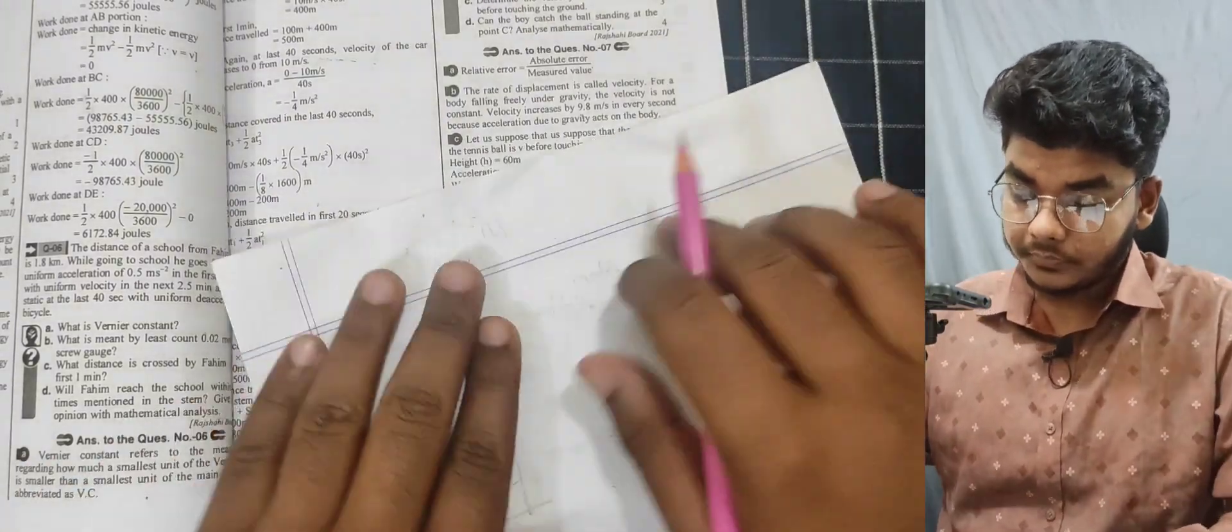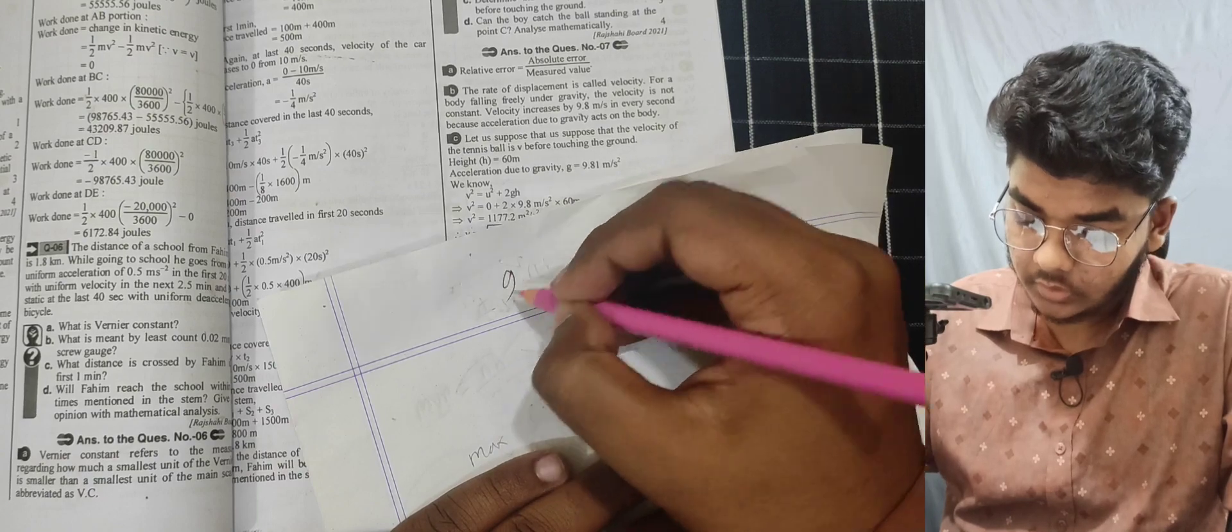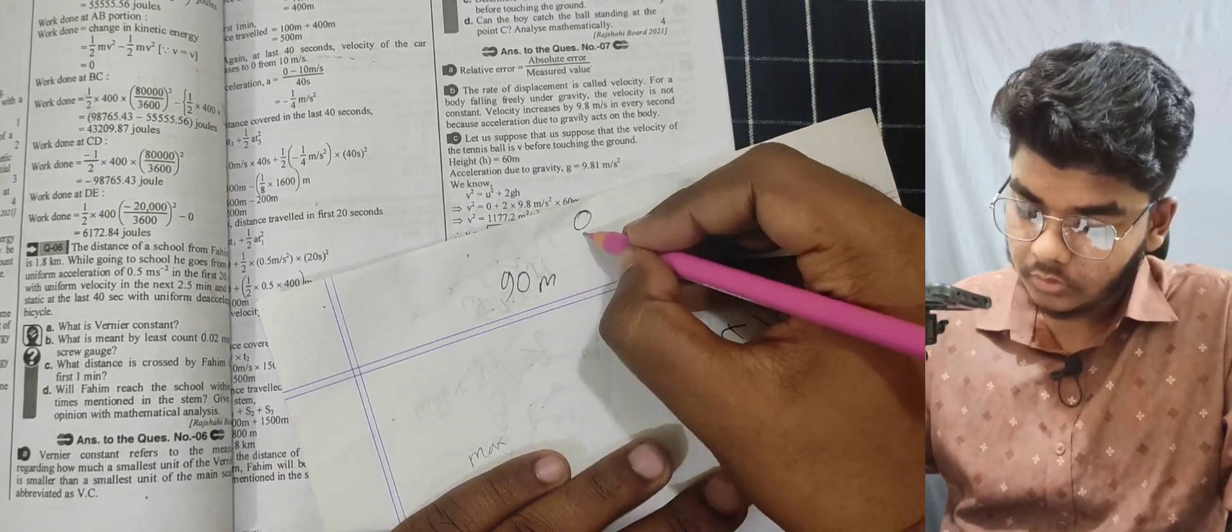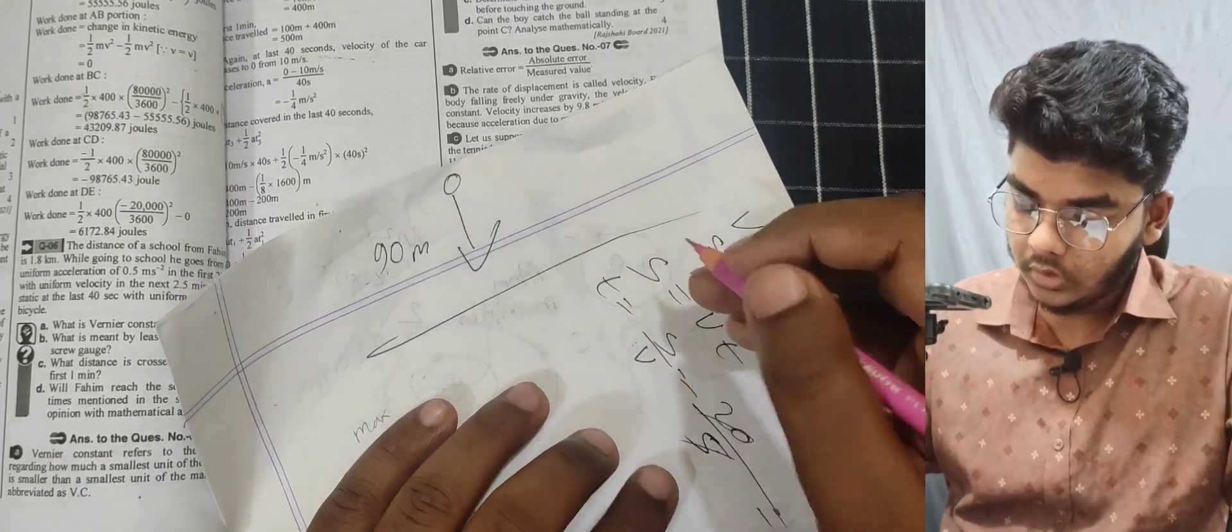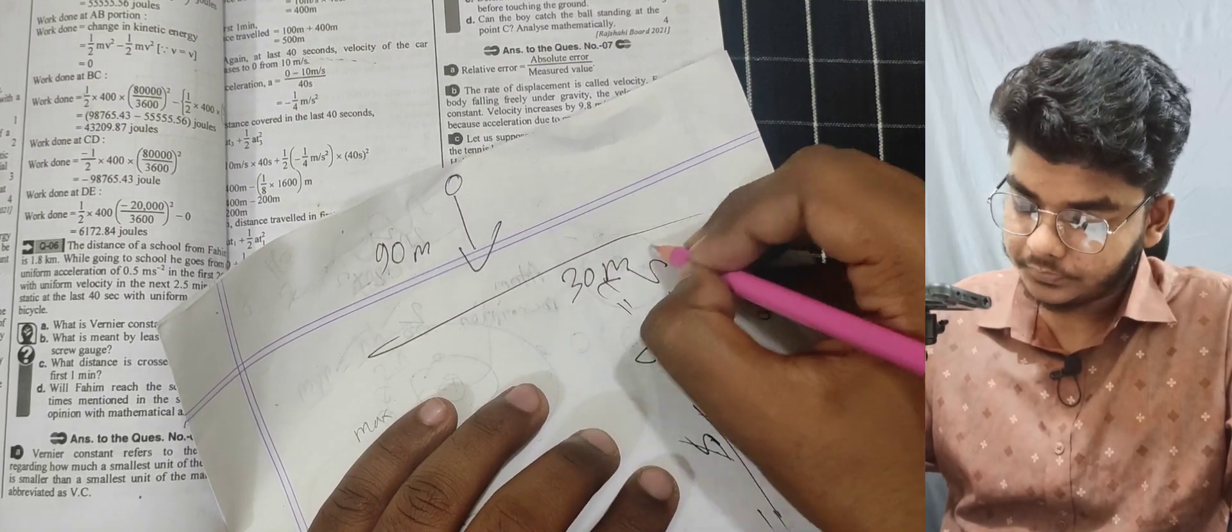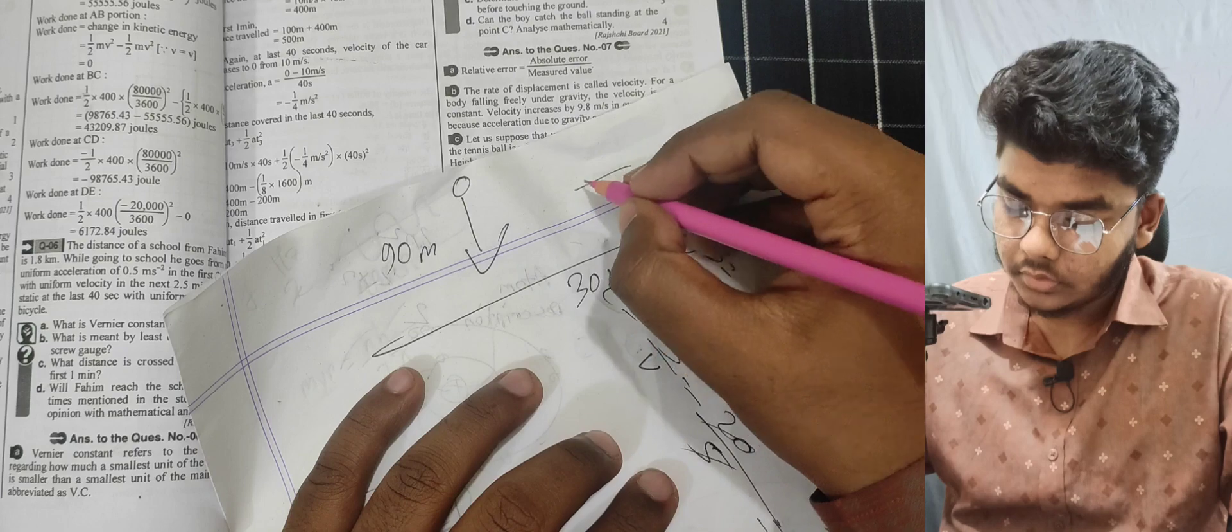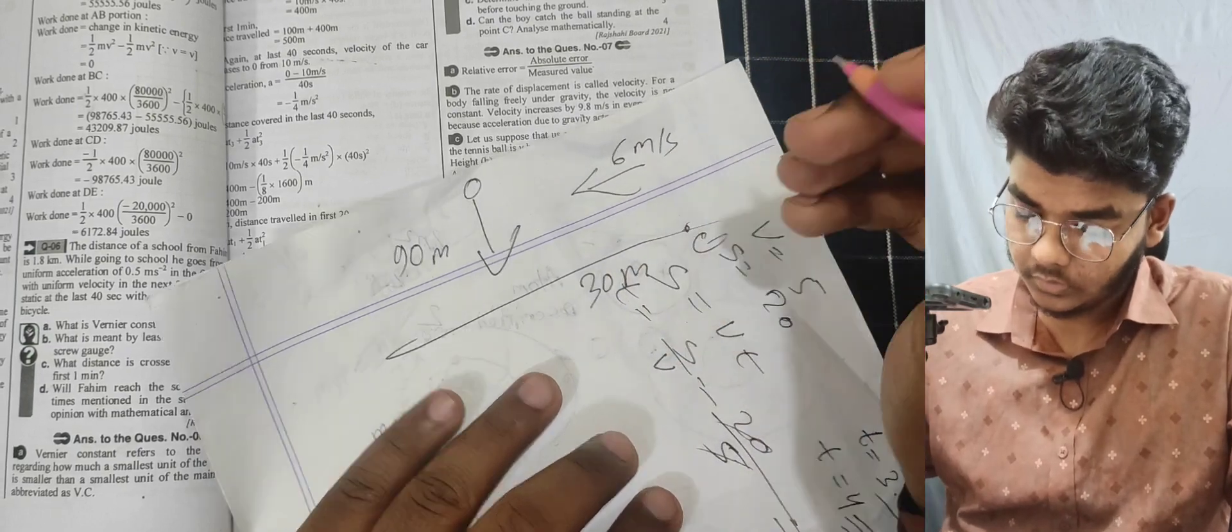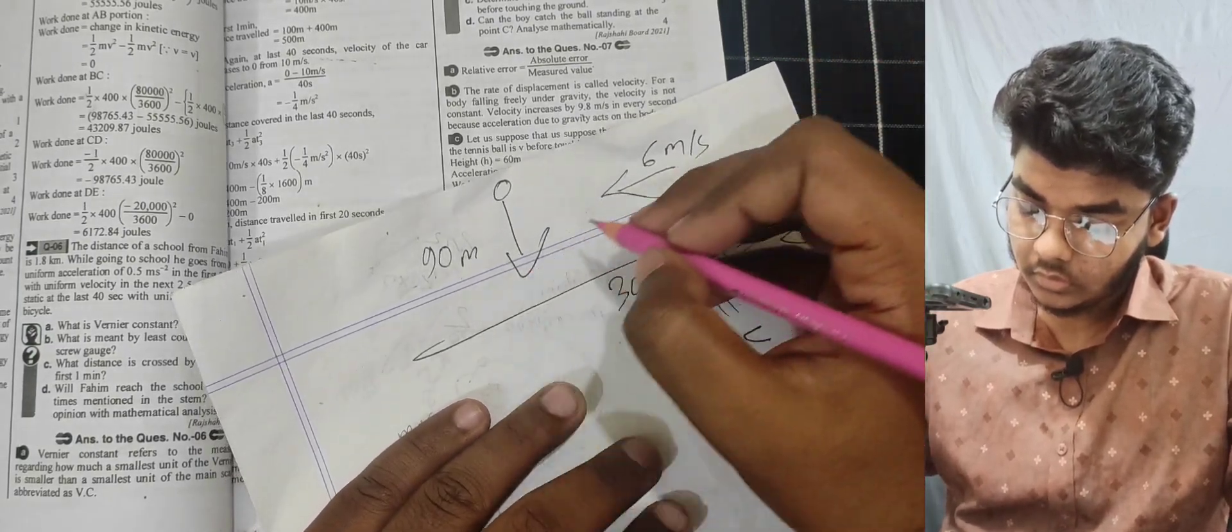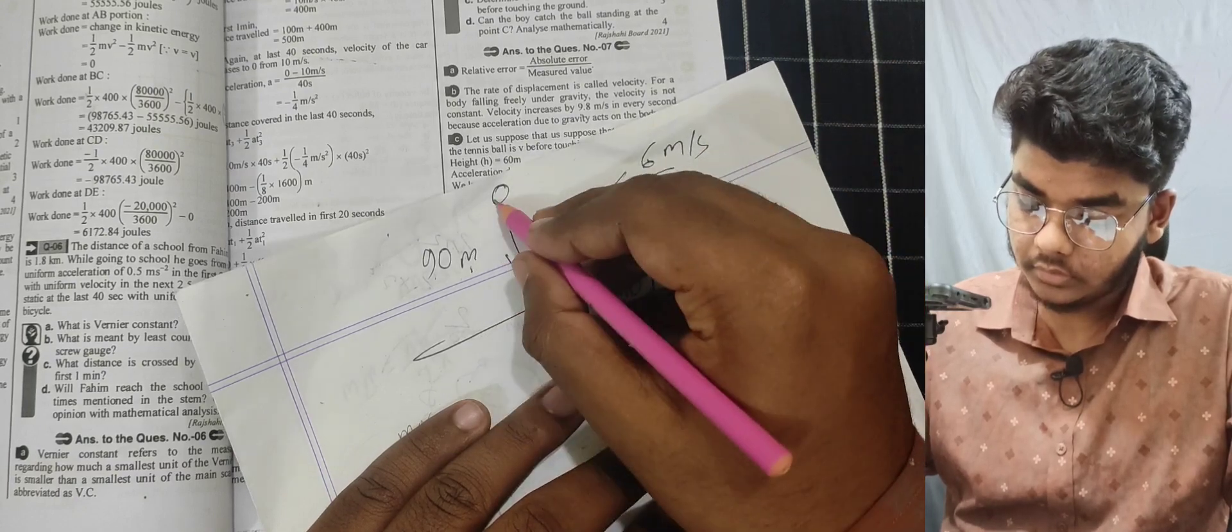Same question but with 90 meters height instead of 60 meters, and the boy is 30 meters away at point C with acceleration of 6 meters per second.